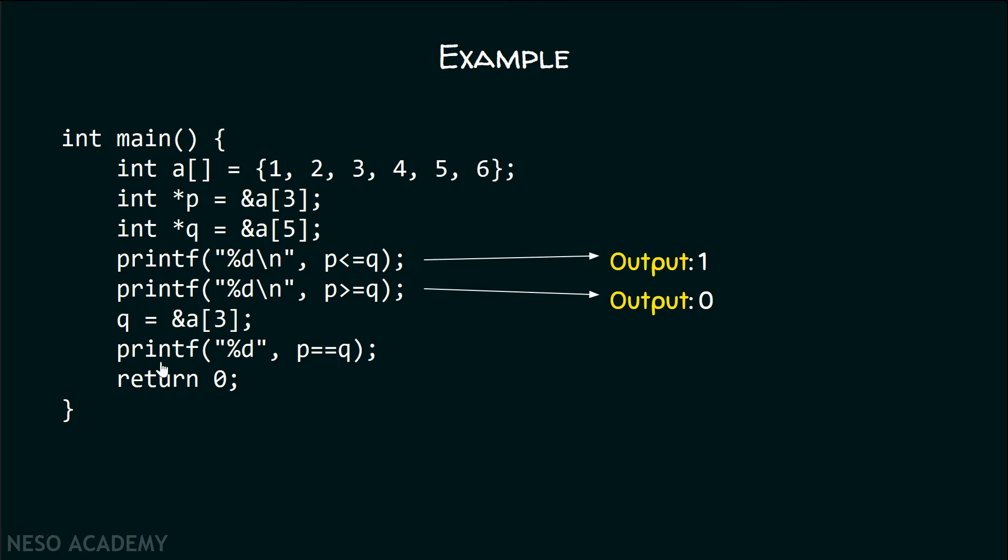With the help of this printf function, I can print the result of P equals Q. P is equal to Q, therefore the output is one.